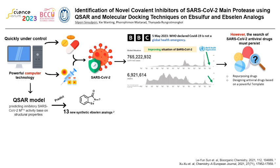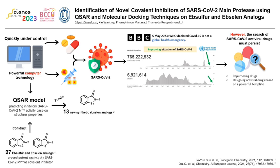In this work, I will use a computer to predict the inhibitory SARS-CoV-2 activity of new synthetic epsilon analogs by a QSAR model. QSAR, or quantitative structure-activity relationship, is a popular technique for drug discovery. The QSAR model used in this work was constructed from 27 epsilon and epsilon analogs that were proven active against SARS-CoV-2 main protease as covalent inhibitors.